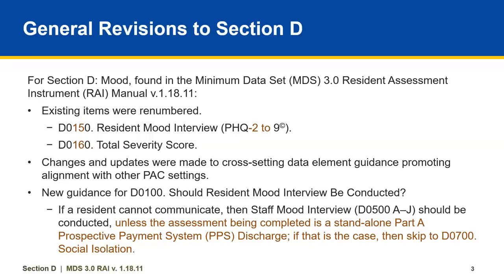If a resident cannot communicate, then Staff Mood Interview D0500 A-J should be conducted, unless the assessment being completed is a standalone Part A Prospective Payment System PPS discharge. If that is the case, then skip to D0700 Social Isolation.